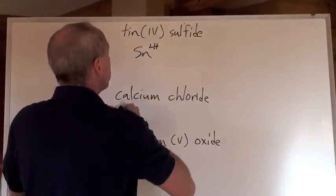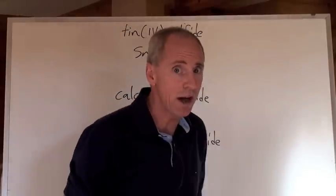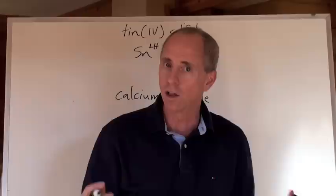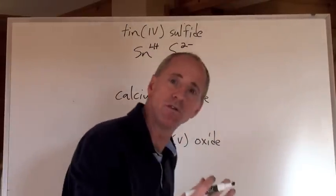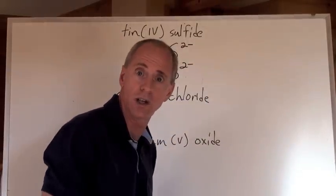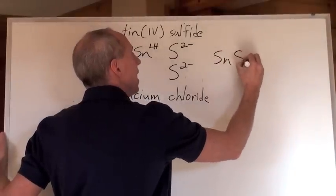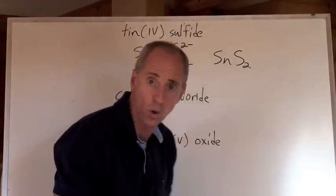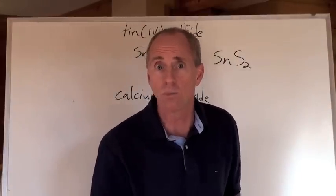Sn with a 4+ charge, sulfide is 2- charge. If you have that technique of just switching the charges to get the ratio, look out. This is saying I'm losing 4 electrons, and the 2 of us will gain those 4 electrons. 4 positive, 4 negative total. The formula is SnS2, and it's not Sn2S4. That's garbage chemistry, don't do that, because that's going to be on the test. Be careful.